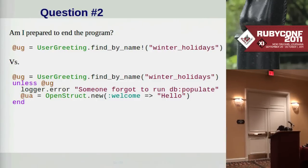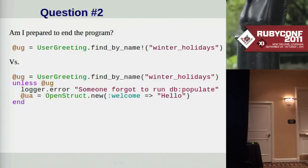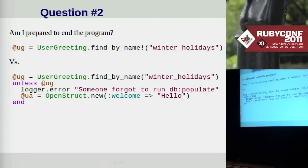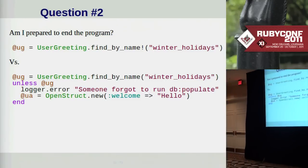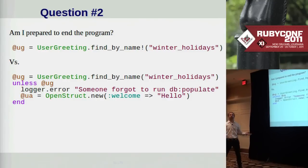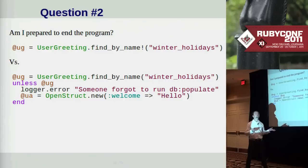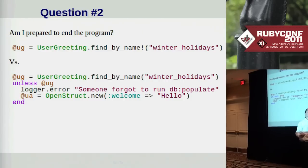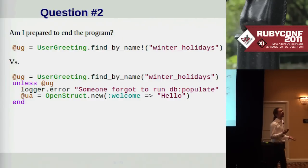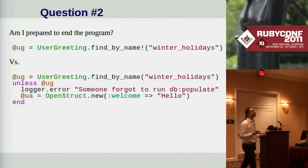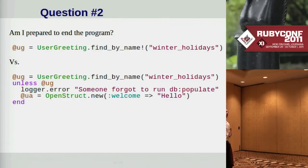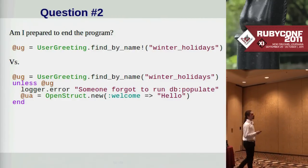Another question to ask yourself: am I prepared to end the program? Any unhandled exception can end the program, or in the case of an application server, at least end the request. Sometimes just looking at it from this perspective — am I prepared to end the program over this? — can change your thinking. You might decide that a particular case is secondary functionality, and maybe you should just fall back in some way and not actually raise an exception there.